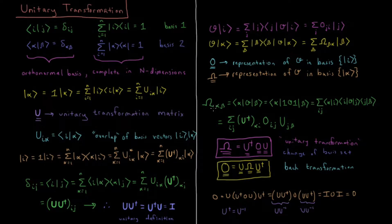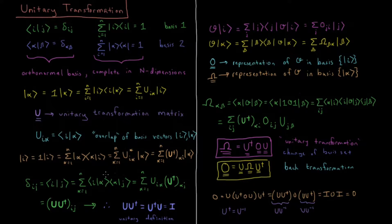Let's work out omega_αβ more explicitly. We insert two resolutions of the identity — one for I and one for J — and sum over both. This gives us a sum over I and J of U†_αi times O_IJ times U_Jβ, which is exactly the definition of matrix-matrix multiplication for three matrices. So this shows us that omega equals U† O U. Equivalently, we can show that O equals U omega U†. This operation is called a unitary transformation.